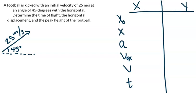Hi physics fam! We are going to be doing an angled projectile, and just for this first part we're going to determine the time of flight. The question does ask for other pieces but we're going to highlight that in separate videos. We have this football kicked with an initial velocity of 25 meters per second at an angle of 45 degrees with the horizontal.